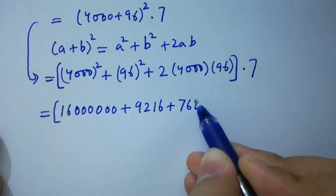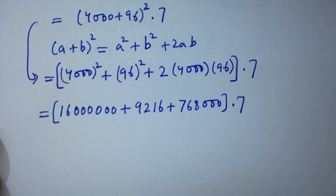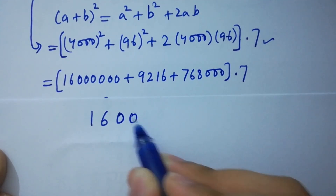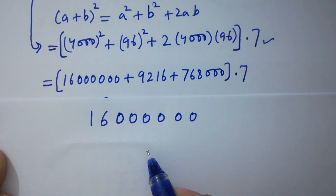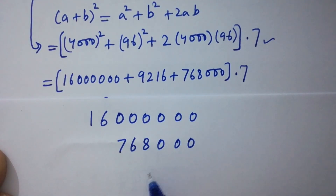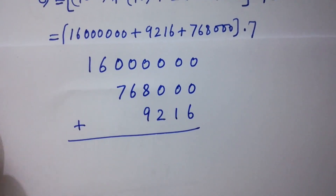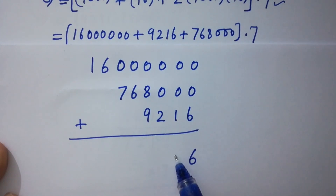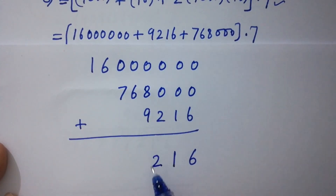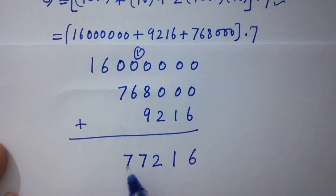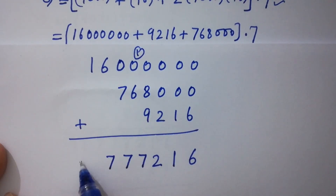So we add: 16,000,000 plus 768,000 plus 9216. Adding them: the result is 16,777,216. In the next step, multiply by 7.